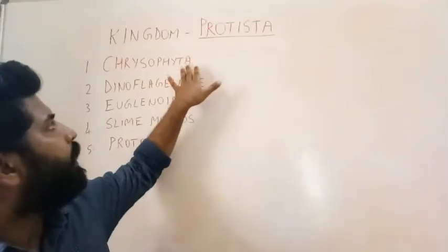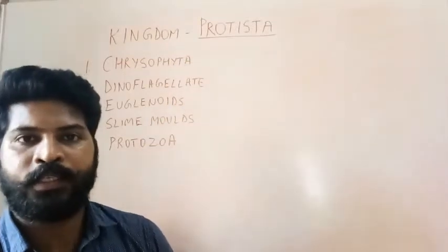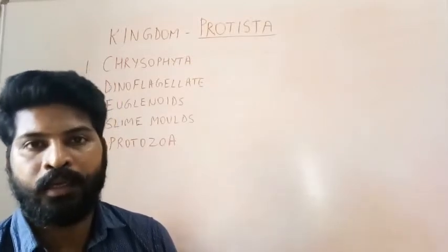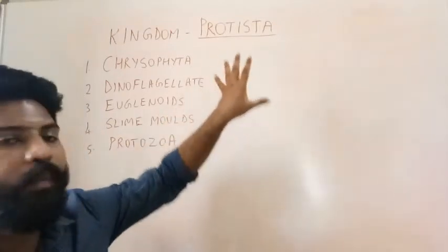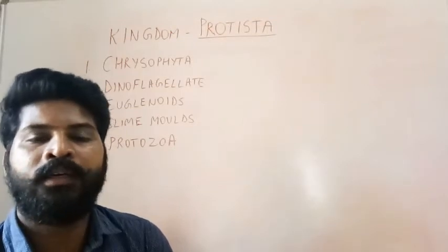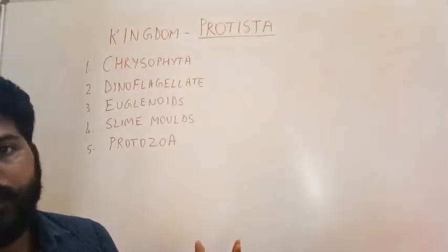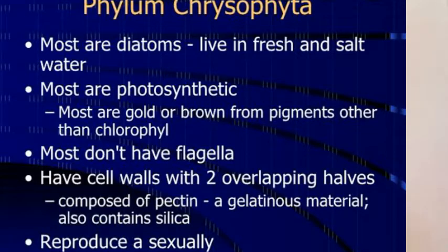Phylum number one: Phylum Chrysophyta. The word 'chryso' refers to golden, so most of these organisms have a golden color. Chrysophyta commonly includes the diatoms and desmids, which are mostly aquatic — marine or freshwater. These are autotrophic; they have pigments to trap sunlight and prepare their own food. Therefore diatoms are the primary producers in seas and water bodies.